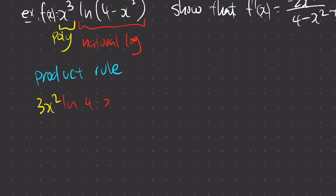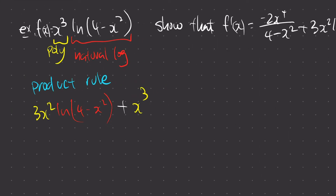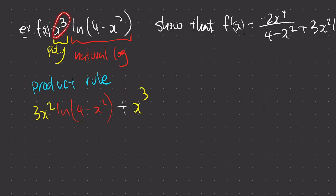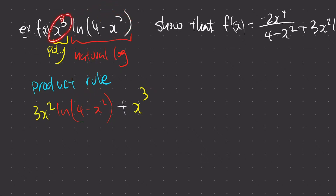Then plus: don't d the second, so I just copy down x cubed. Then d the second — don't d the first, copy it down; d the second, put it down. Now the question is how do you differentiate ln(4 minus x squared).